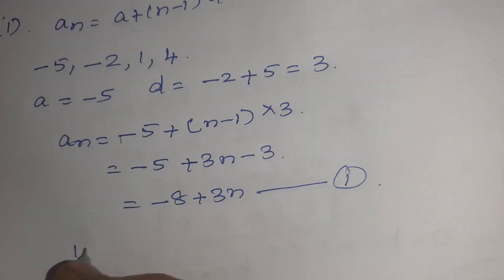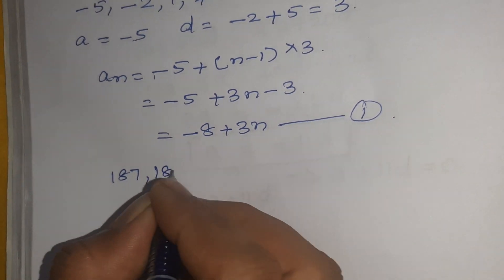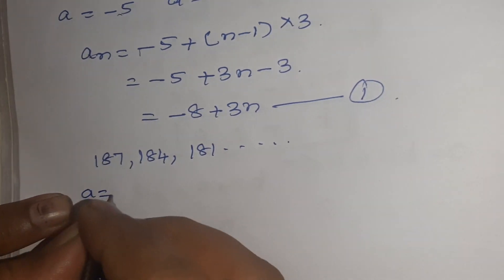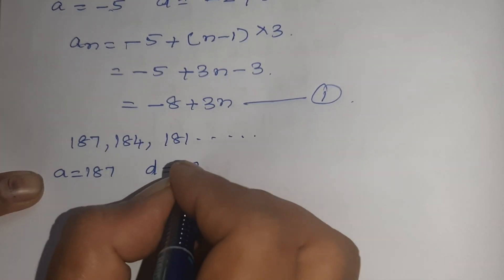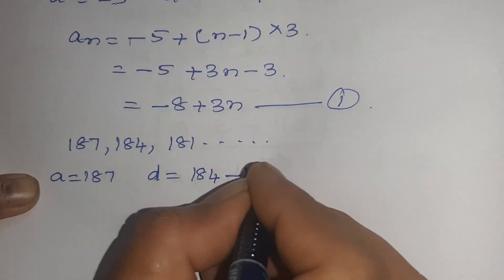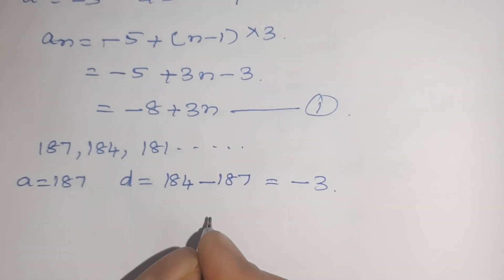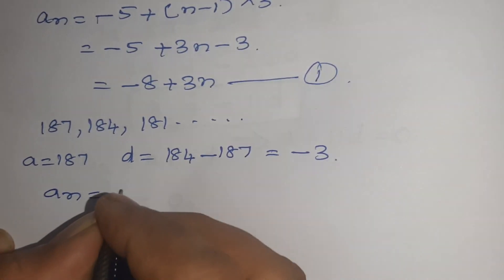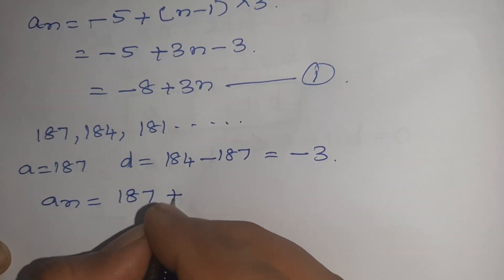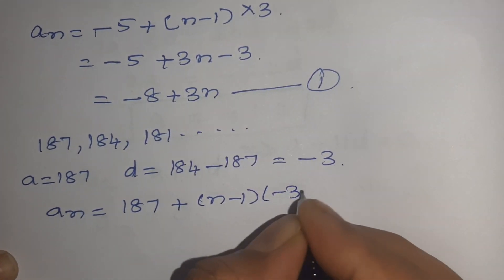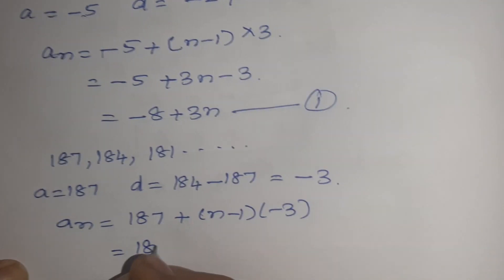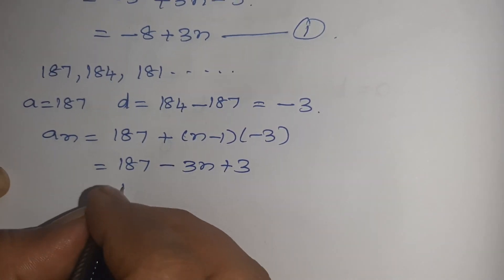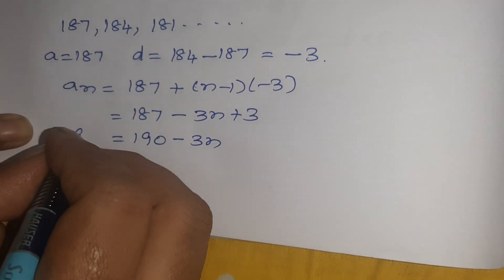The next series is 187, 184, 181, etc. So here A = 187 and D = 184 - 187 = -3. Then AN = 187 + (N-1) × (-3) = 187 - 3N + 3 = 190 - 3N. So AN = 190 - 3N.